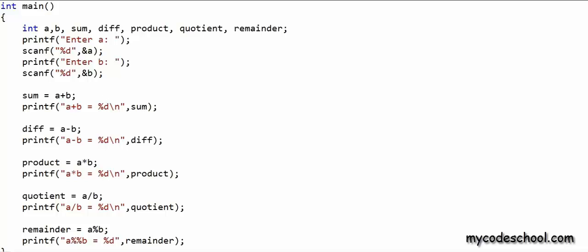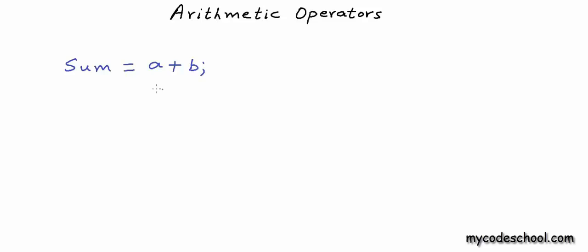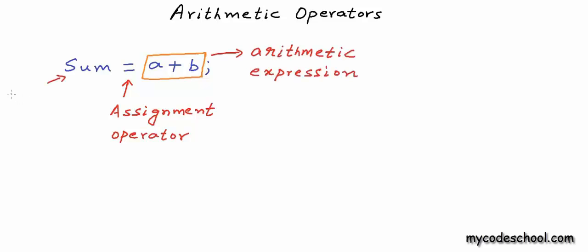So now we know how to do some basic arithmetic in C. We can write an arithmetic expression and assign it to a variable, and once the expression is evaluated, the result will be stored in that variable. In the statement sum = a + b, the equals sign is the assignment operator. On the right-hand side of the assignment operator we have an arithmetic expression, and on the left we have a variable name. We cannot have anything else on the left of an assignment operator — it must always be a variable. On the right we can have a constant, a variable, or an expression.